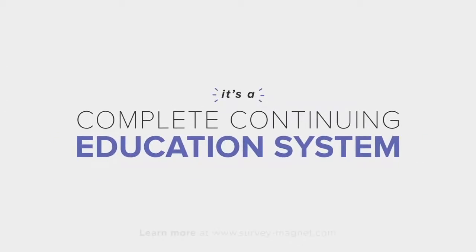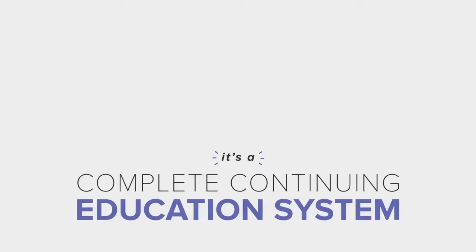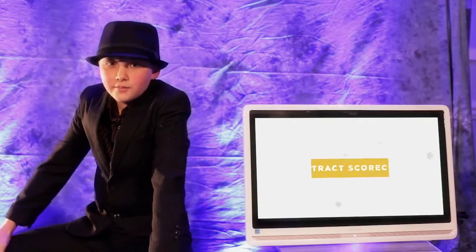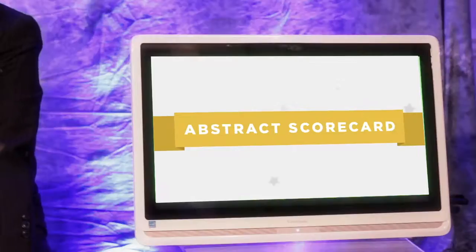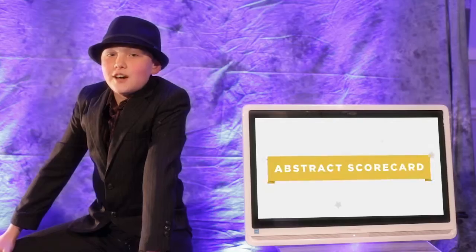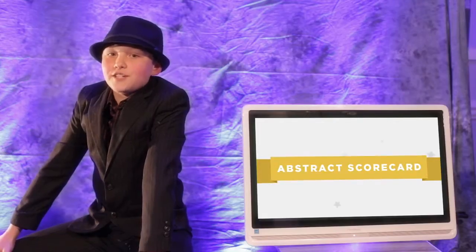From start to finish, it's the only completely integrated conference management system in the world. Pretty cool, huh? Here, let me show you how it all works together. First, you figure out what your conference is about. Then you set up a call for papers in the abstract scorecard. Speakers can upload their abstracts and your team can rate them in a super convenient side-by-side review window. Then you simply select which abstracts are the best. Tracy is our abstract scorecard manager. She will explain the rest. Over to you, Tracy.